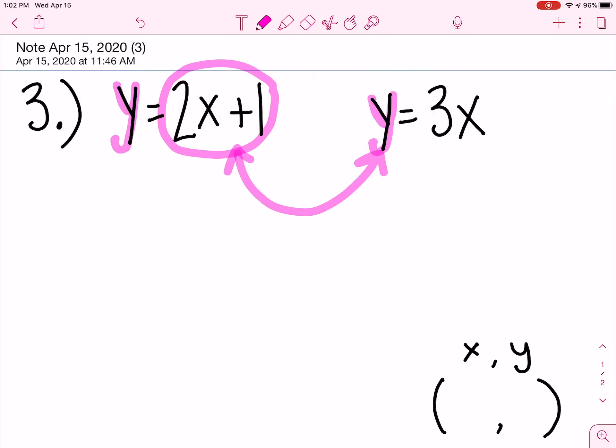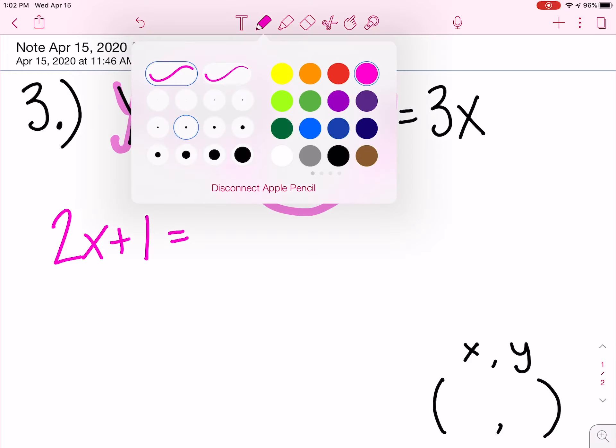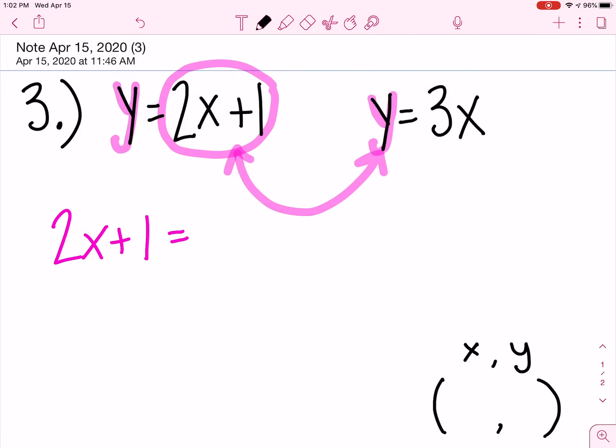I'll show you here using the same color. So instead of y, I'm going to do 2x plus one equals 3x.